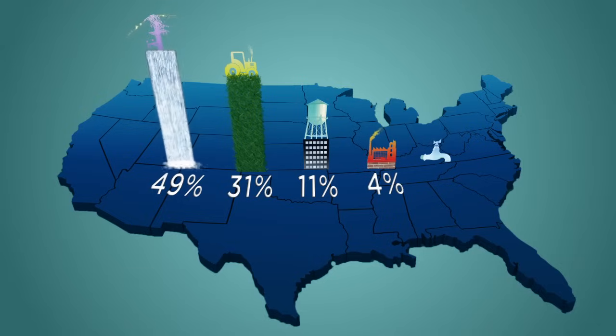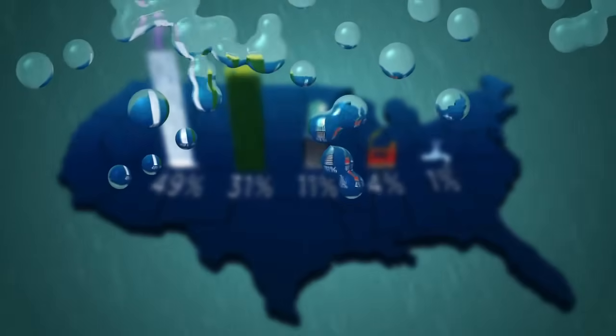4% goes into industry and manufacturing, and 1% is domestic use. The water coming out of our faucets largely comes from precipitation.